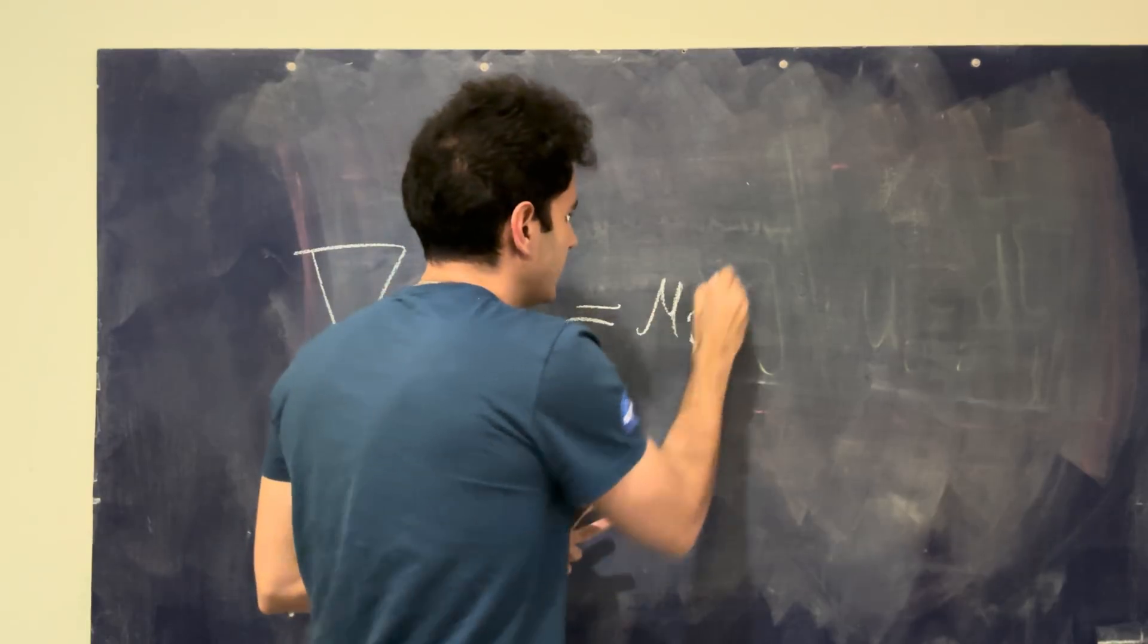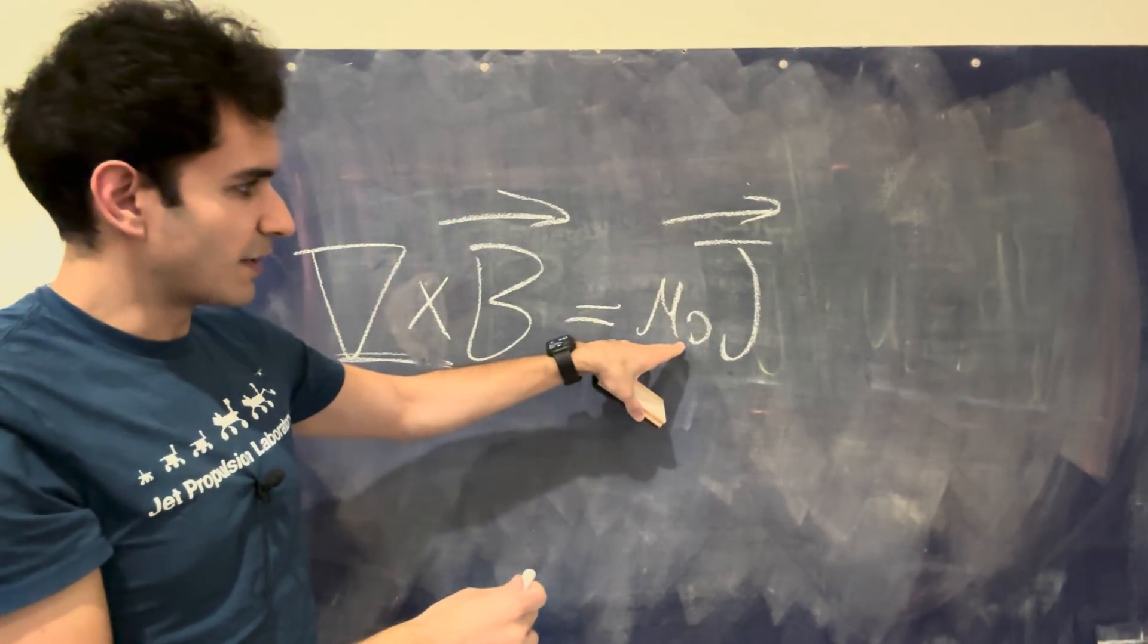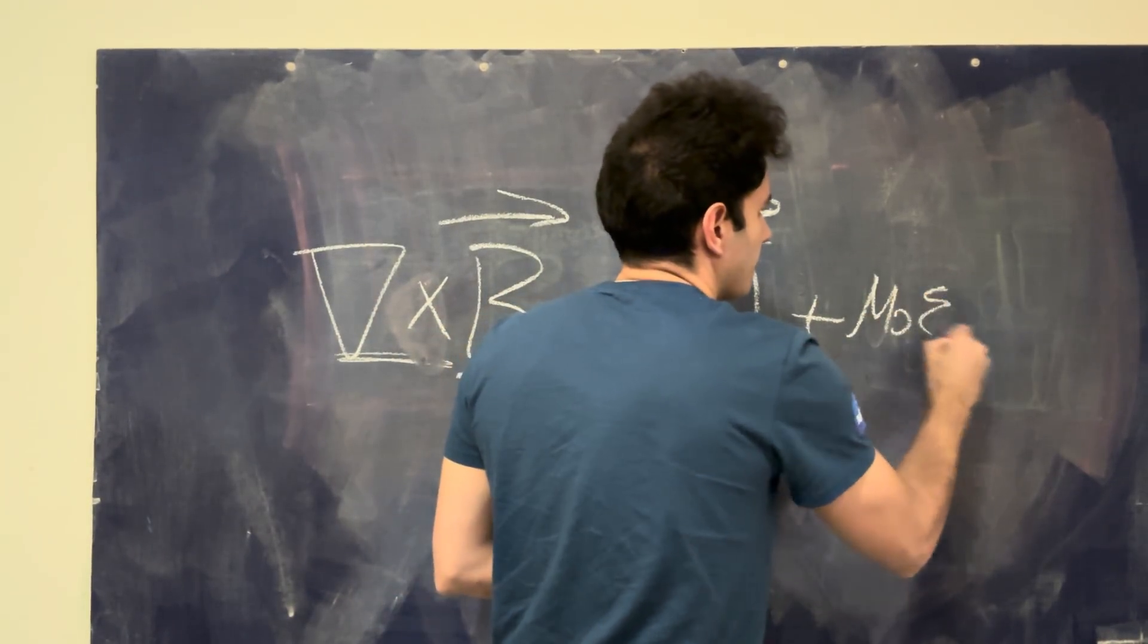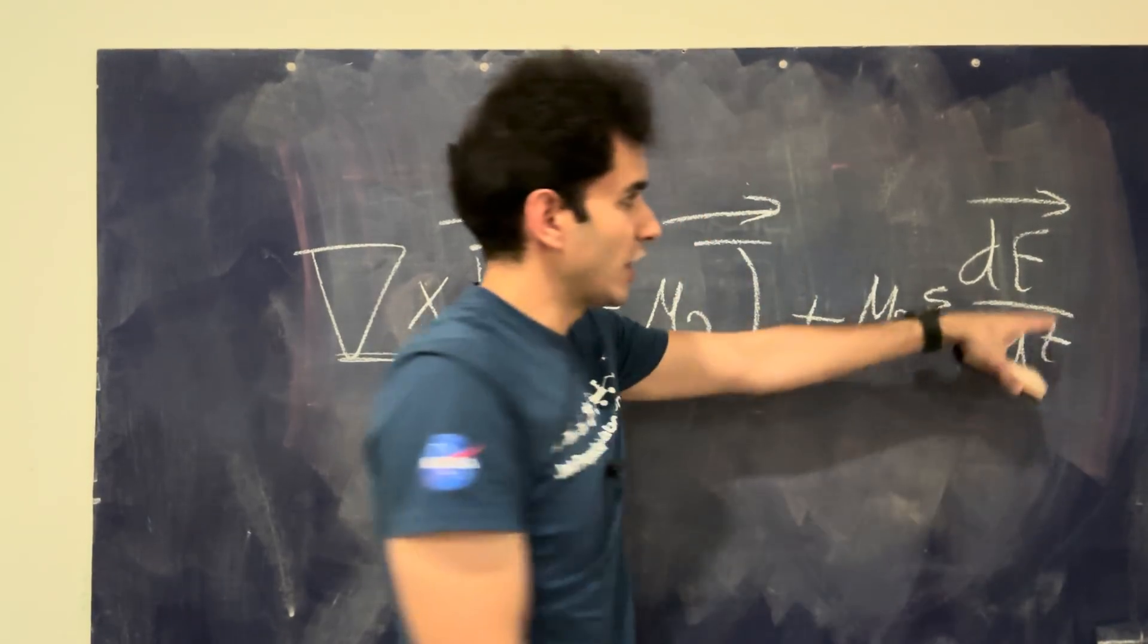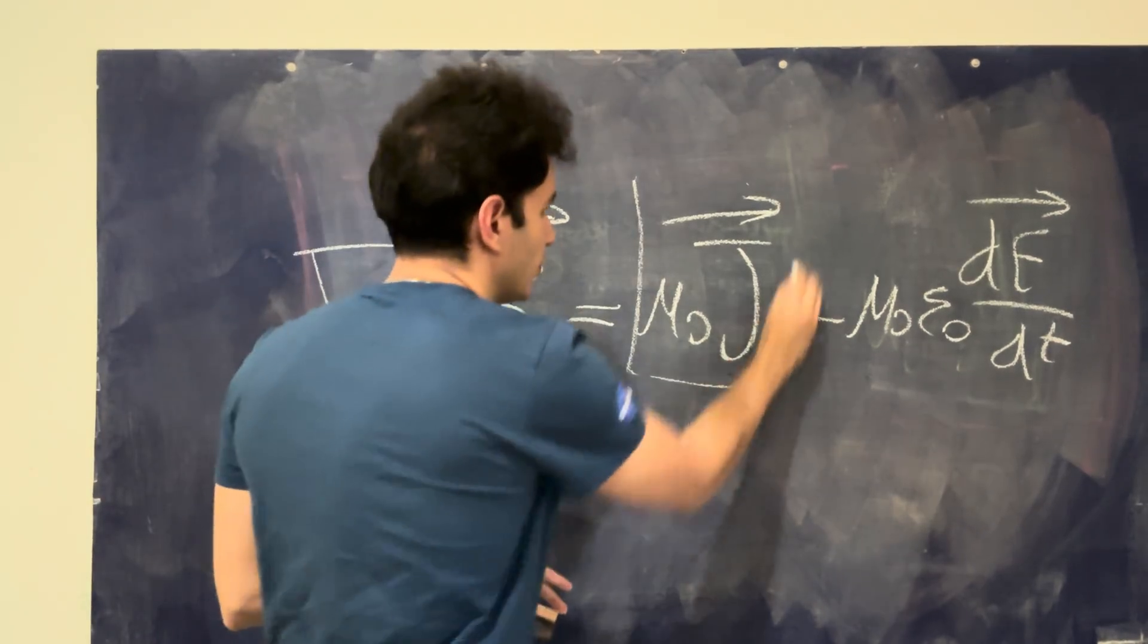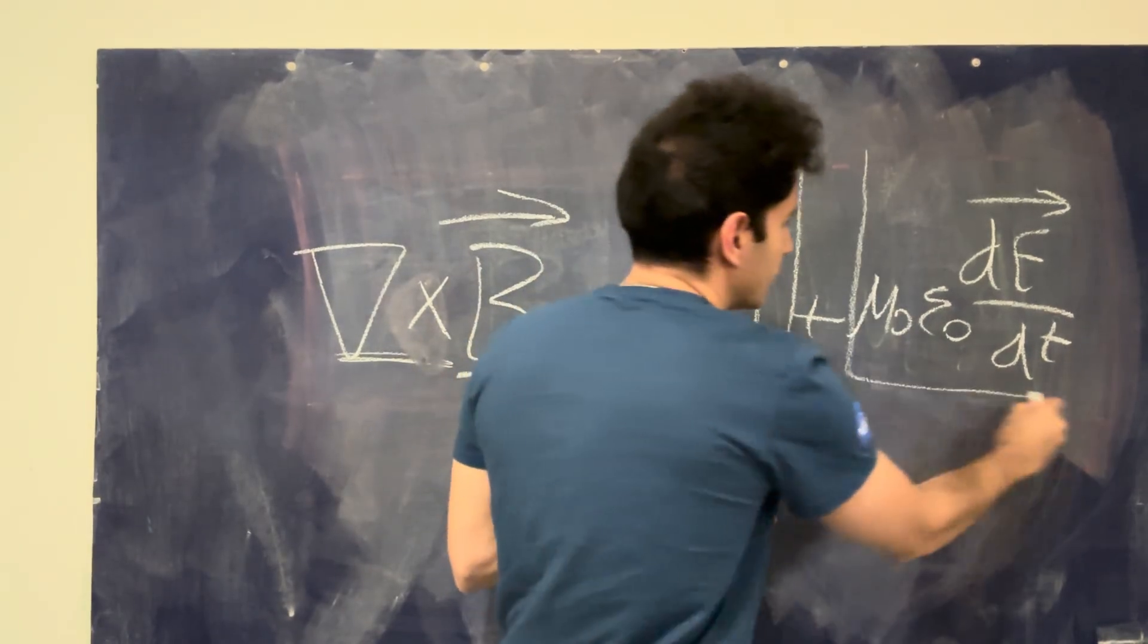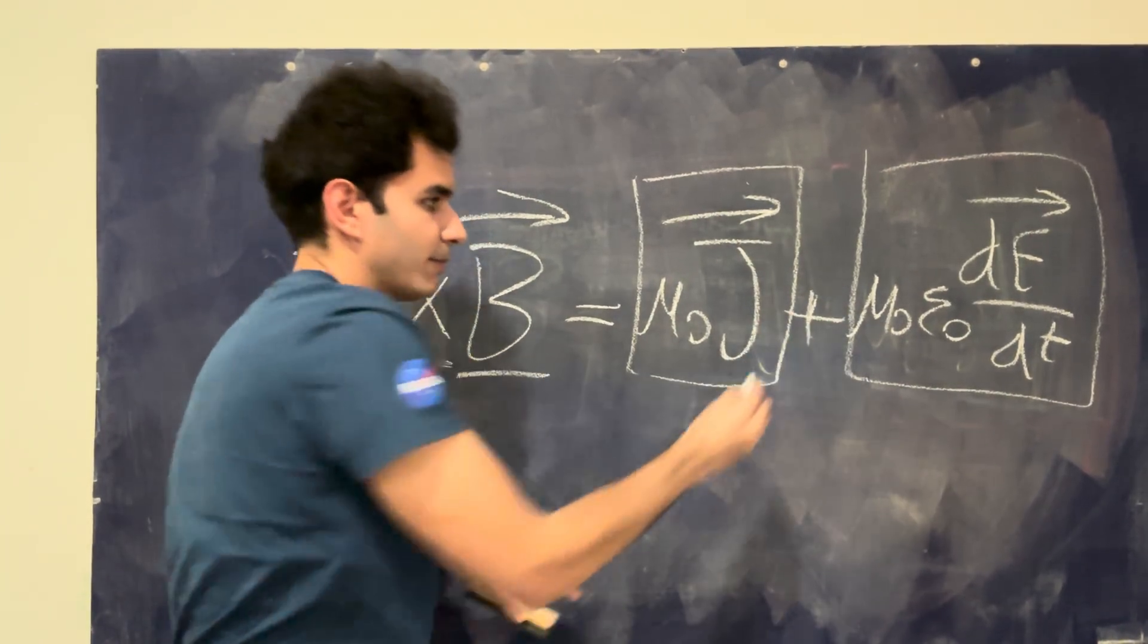But basically we say that the curl of the magnetic field, or basically a changing magnetic field, is caused by two things. First thing is this other vector, J, with some constant next to it. Or it is caused by a dE over dt. In other words, a changing electric field with respect to time. So this, on its own, can create a magnetic field to curl or change. This, on its own, can also create a magnetic field to curl and change. Hence, they're separated by a plus sign.